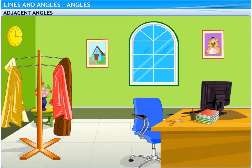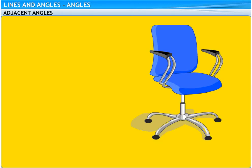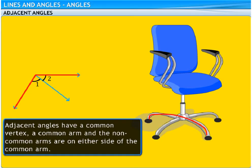Look closely at the computer chair in Tom's room and observe the angle formed by the legs of the chair. We can see that the angles have a common vertex and a common arm. Also, notice the non-common arms. They are on either side of the common arm. Such pairs of angles are known as adjacent angles.